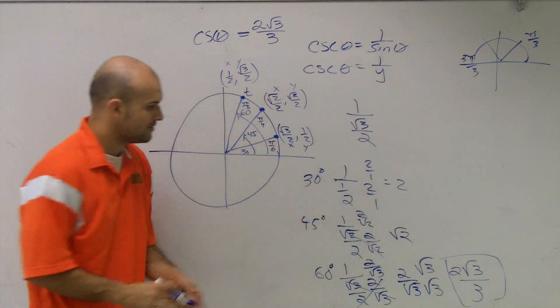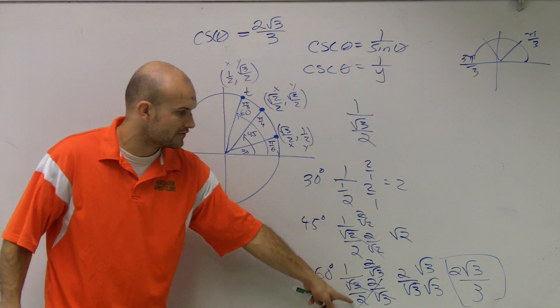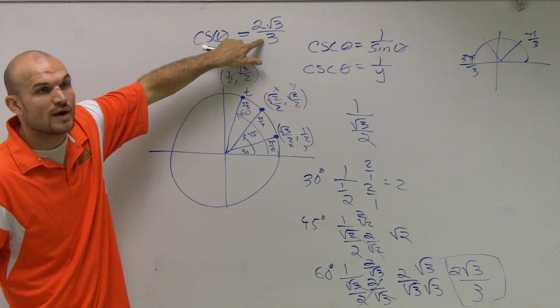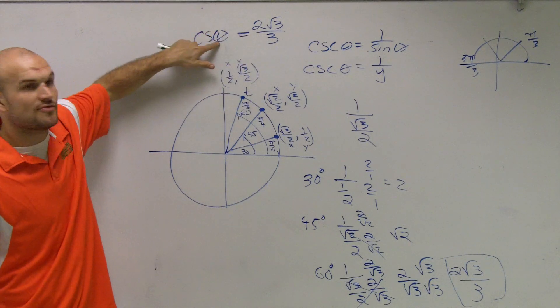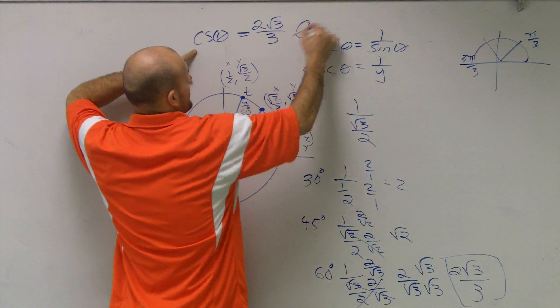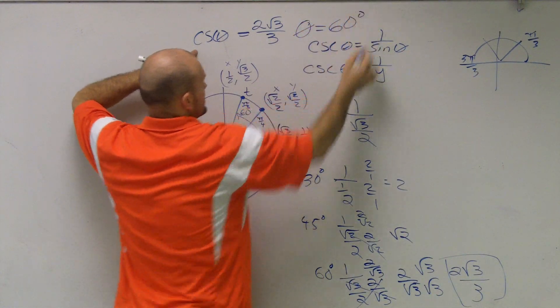So that tells me, when I take 1 over my coordinate, radical 3 over 2, 1 over this y, I obtain 2 radical 3 over 3. So what theta did I use? 60 degrees. So you can say that theta is equal to 60 degrees.